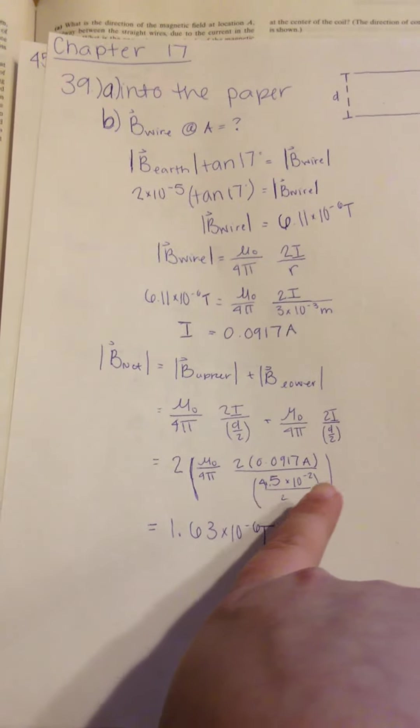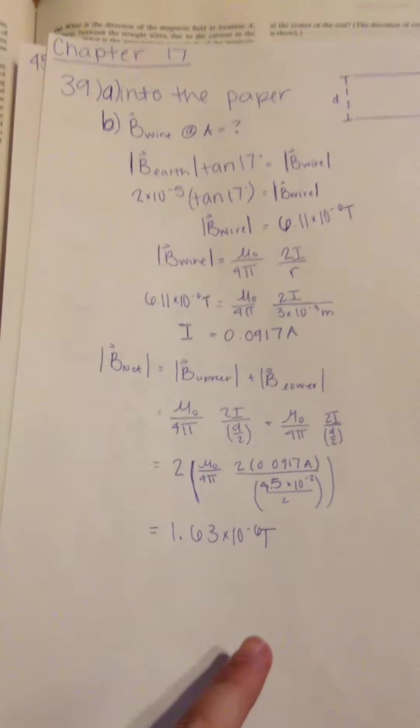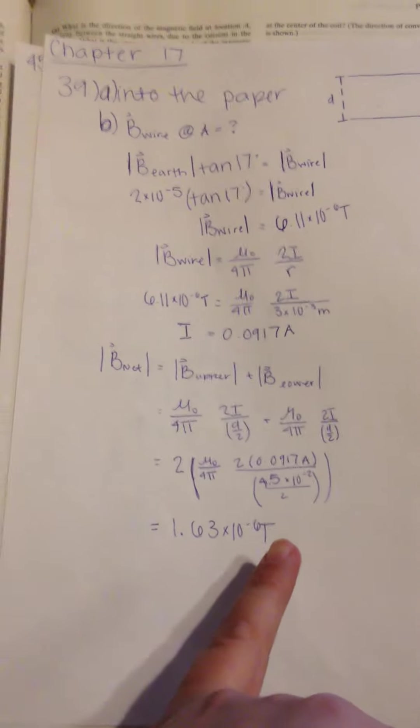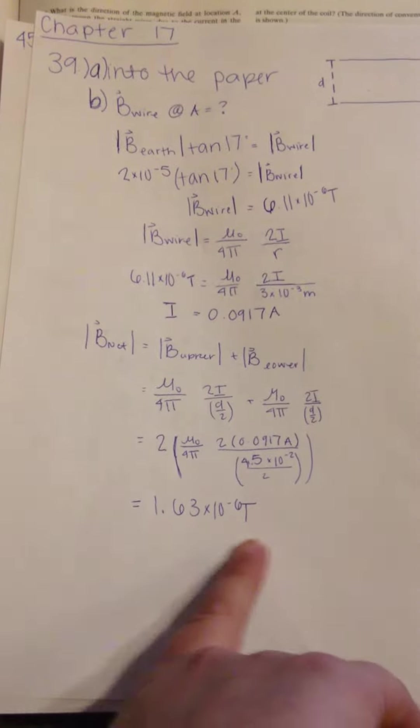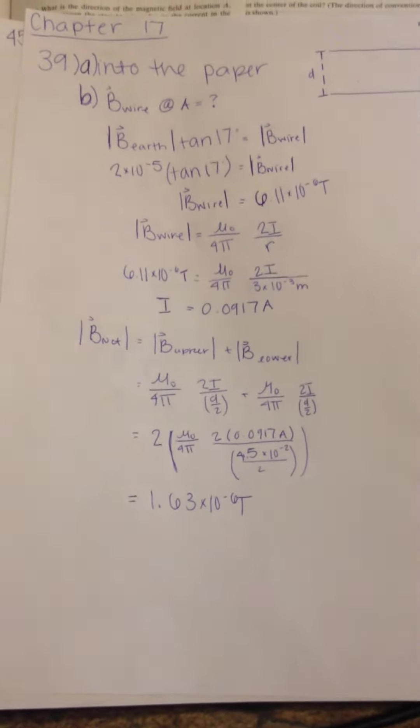And then we have the distance, they give that to us. Over L. I'm sorry, that's over 2. And then go from there, and we're going to plug that into your calculator, and then you're going to get 1.63 times 10 to the negative 6.